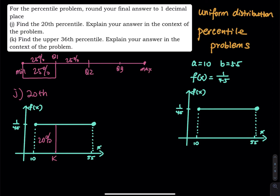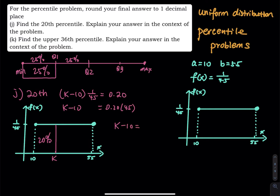To find k for the 20th percentile, we set up: (k minus 10) times the height equals 0.20. Multiply both sides by 45 to get k minus 10 equals 0.20 times 45, which equals 9. So k minus 10 equals 9, meaning k equals 9 plus 10, which equals 19. That means the probability that a student finishes lunch between 10 and 19 minutes is 20%.